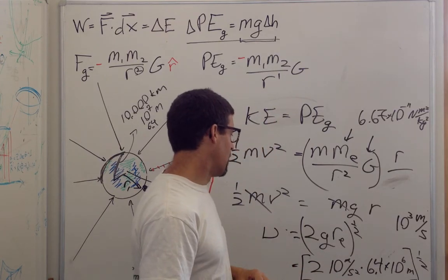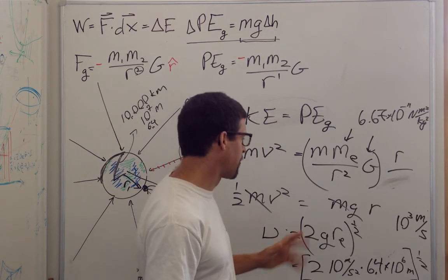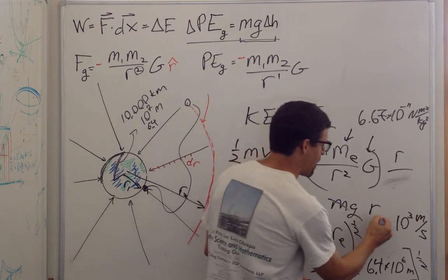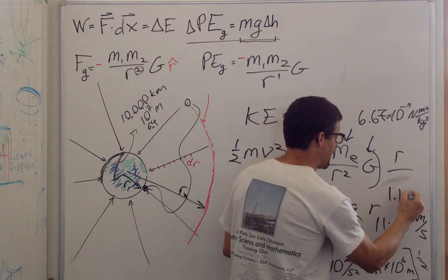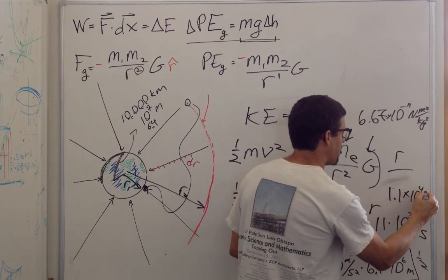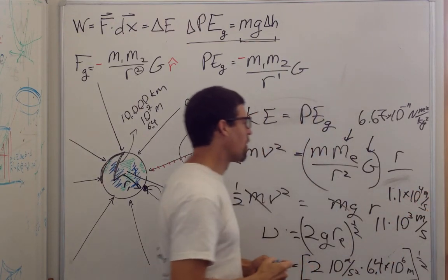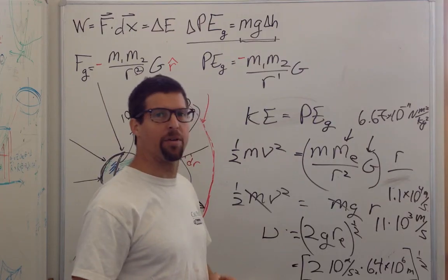And then I have 20 times 6.4, that's about 120, 130, so about 11. So we're talking about 1.1 times 10 to the 4th meters per second, or about 11 kilometers a second.